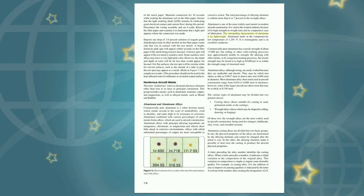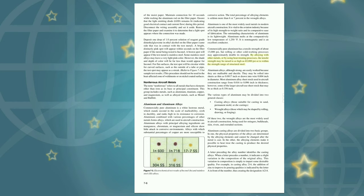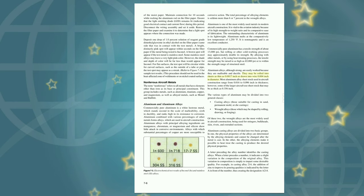Aluminum is one of the most widely used metals in modern aircraft construction, vital to the aviation industry because of its high strength-to-weight ratio and comparative ease of fabrication. Aluminum melts at the comparatively low temperature of 1,250 degrees Fahrenheit. It is non-magnetic and an excellent conductor. Commercially pure aluminum has a tensile strength of about 13,000 psi, but cold working may approximately double its strength. By alloying or heat-treating, tensile strength may be raised to as high as 65,000 psi. Aluminum alloys may be rolled into sheets as thin as 0.0017 inch or drawn into wire 0.004 inch in diameter. Most aluminum alloy sheet stock used in aircraft construction ranges from 0.016 to 0.096 inch in thickness, though some larger aircraft use sheet stock as thick as 0.356 inch.